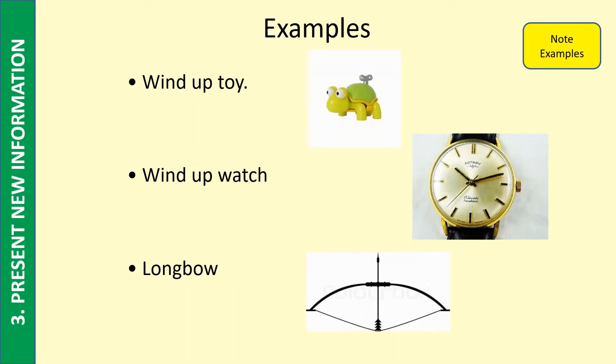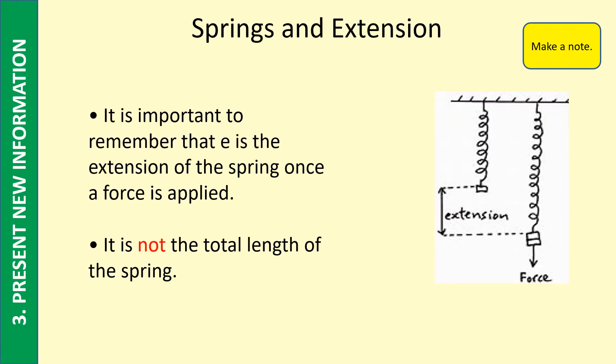Here are three examples of situations where we are stretching or compressing a spring to store elastic potential energy. Be careful when you're doing questions on this topic. E is the extension of the spring, not the total length. So you have an original length, then you apply a force. The spring gets longer, and the amount it gets longer by is the extension.